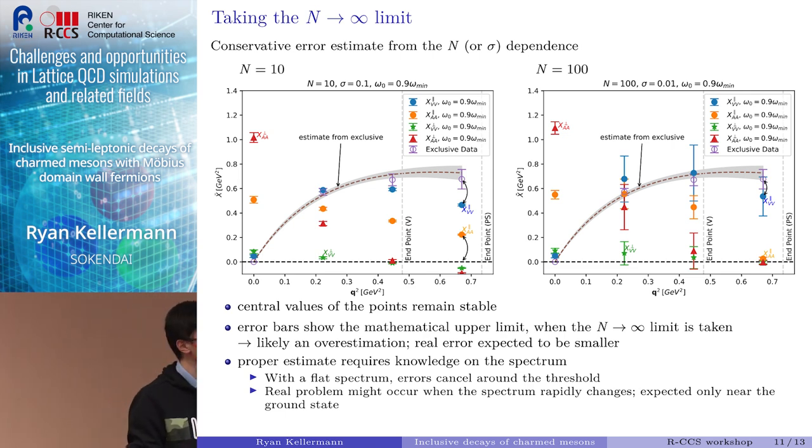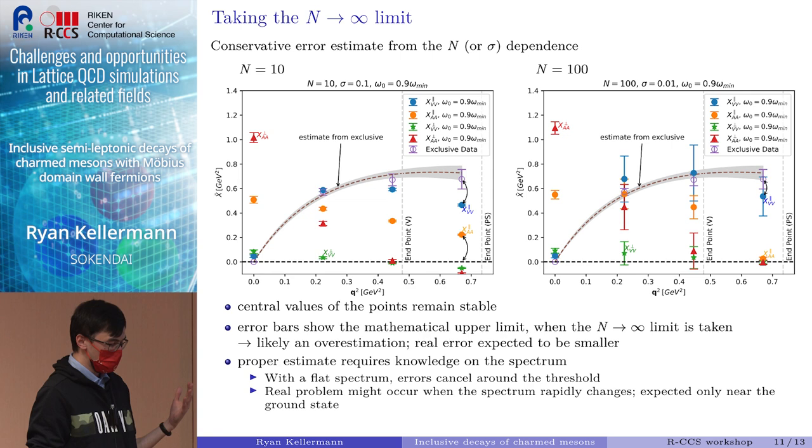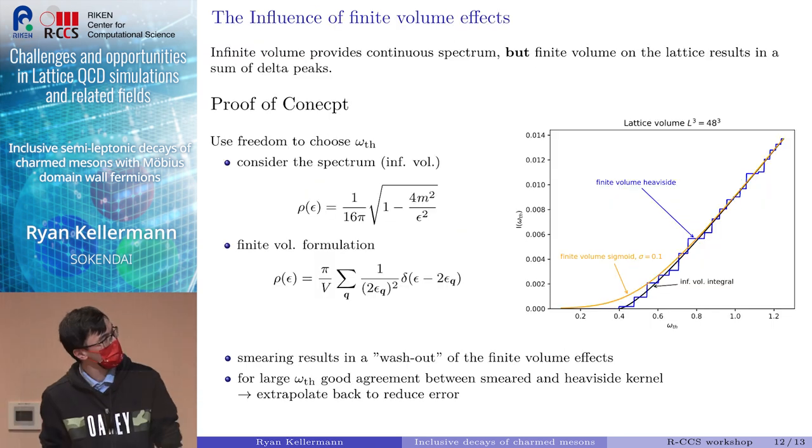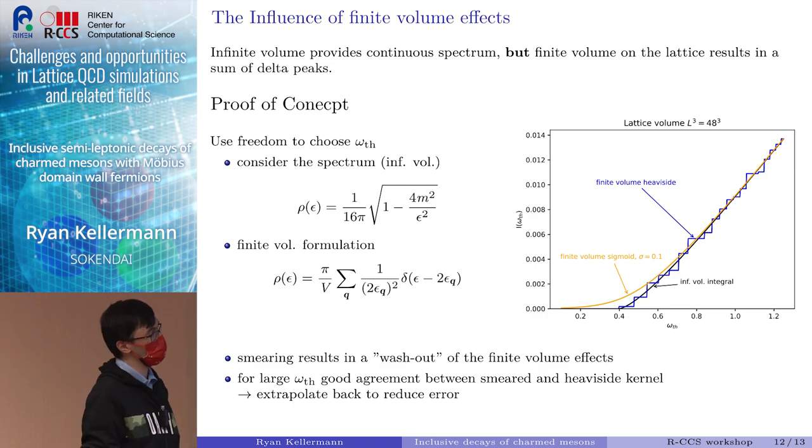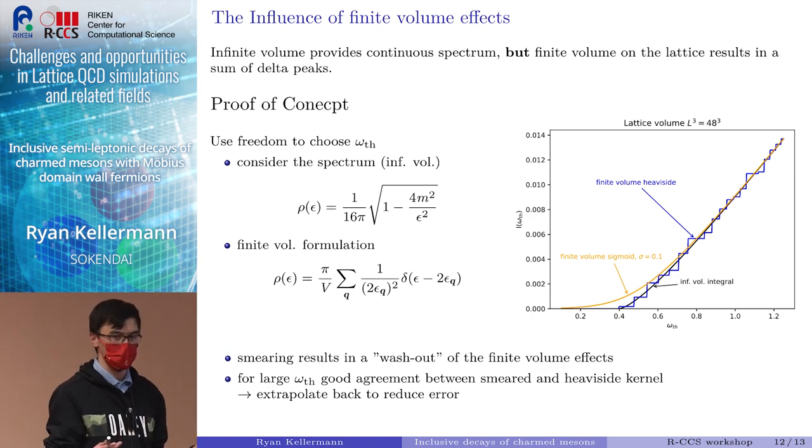But a proper estimate for these errors requires knowledge on the actual spectrum of what we are looking at. If we have a flat spectrum, we assume that all the errors from below and above the threshold would largely cancel, so we expect very small errors. But that's not the case if we have a rapidly changing spectrum, which for example close to the ground state, we would expect larger errors just because a rapidly changing spectrum is harder to properly catch. But talking about a spectrum, this basically comes down to the problem of the finite volume effects, which I'm going to talk shortly about here. Since this is currently work in progress, I can't talk too much about this.